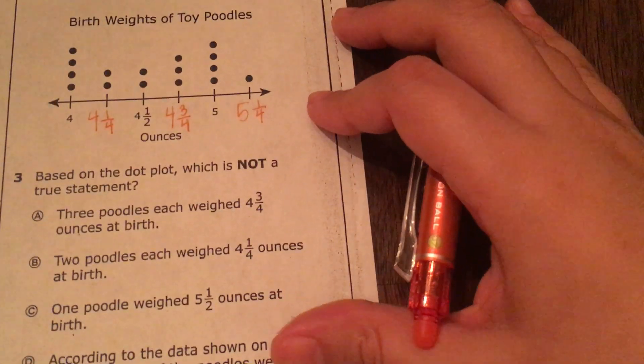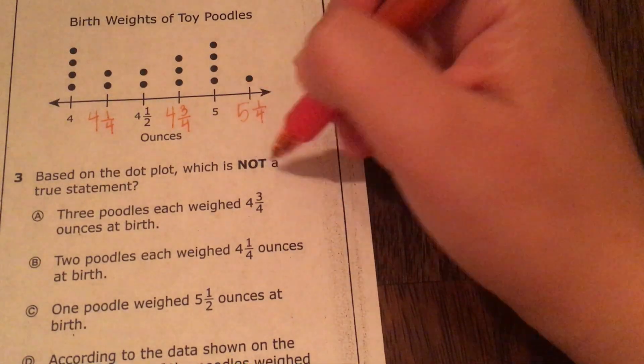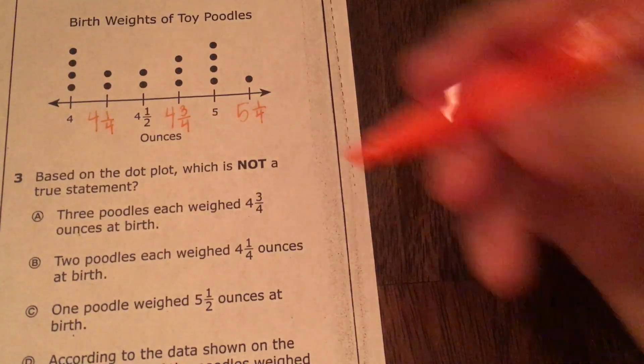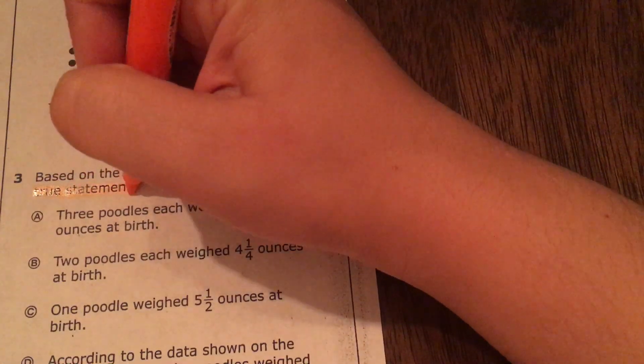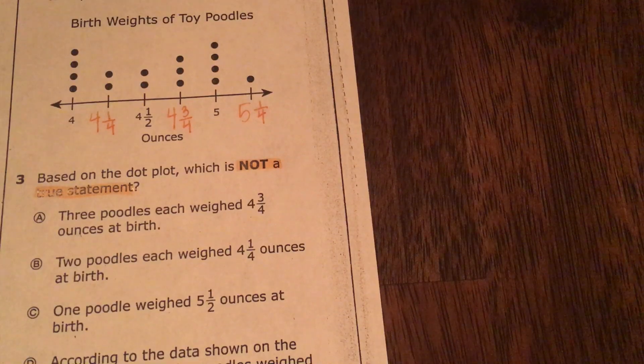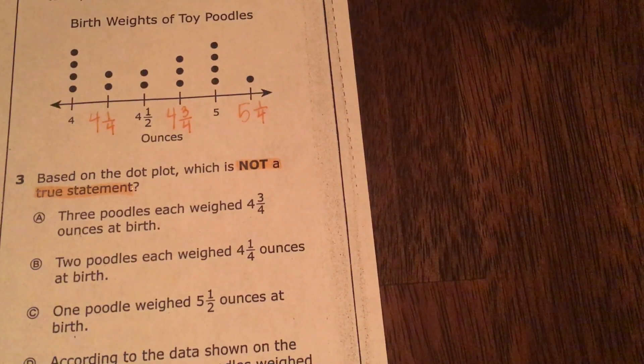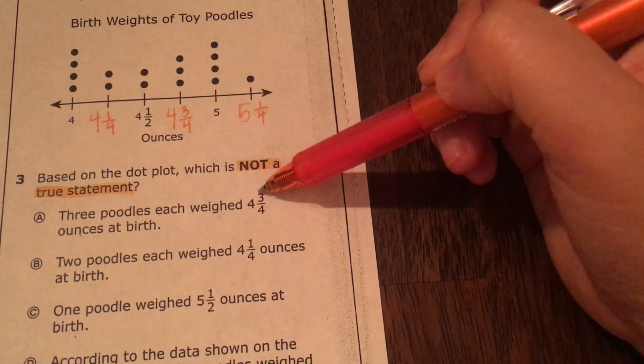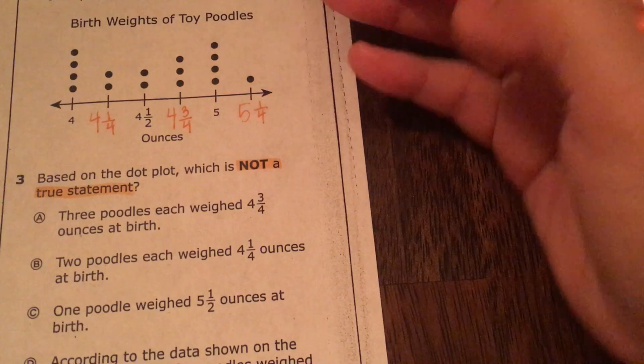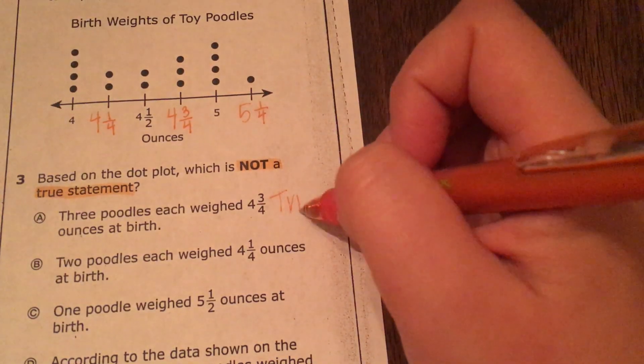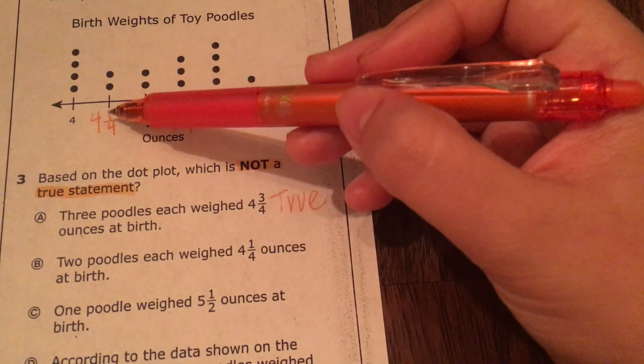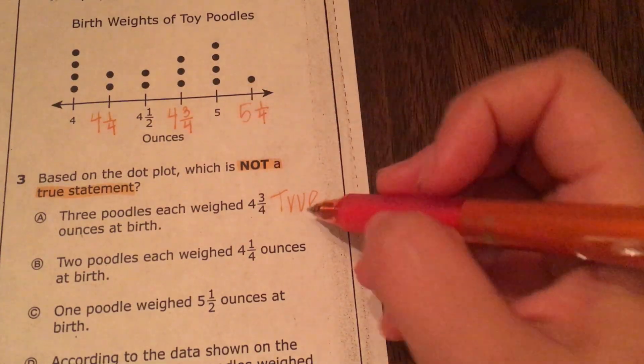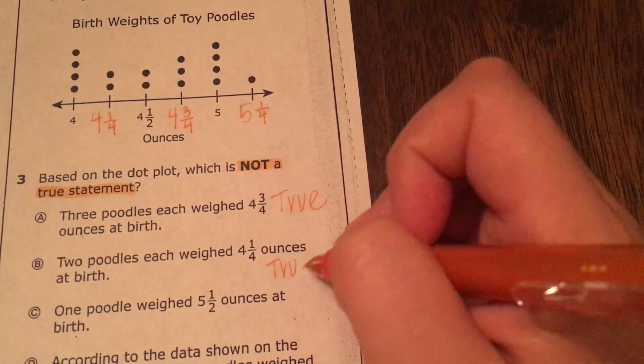Okay. So based on the dot plot, which is not a true statement. All right. So three poodles each weighed four and three-fourths. Four and three-fourths. So right here, one, two, three. So that's true. Two poodles weighed four and one-fourth. Four and one-fourth, one, two. So that's true.